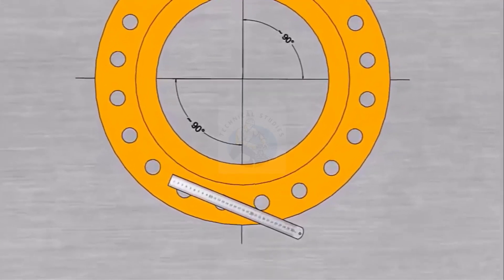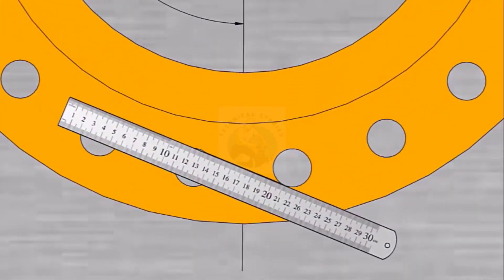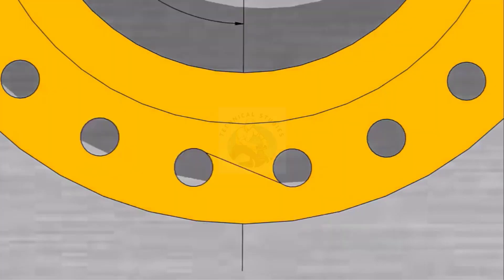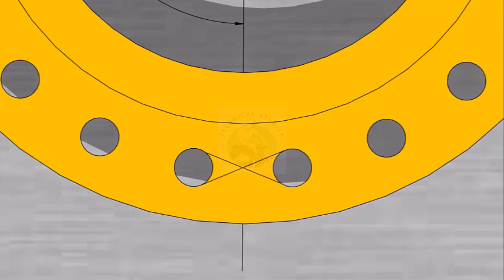Mark the center of any adjacent two holes, drawing tangential lines as shown. Mark the center of the two holes opposite on the other side.